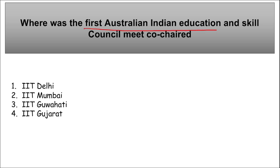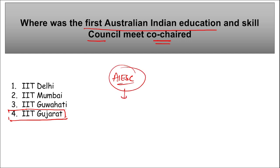The first Australia-India Education and Skill Council meet was co-chaired at IIT Gandhinagar, Gujarat. Education Minister Dharmendra Pradhan — who is Union Minister of Education and Union Minister of Skill Development and Entrepreneurship — co-chaired this first AIESC meeting with Australian Education Minister Jason Clarke and Skill and Training Minister Brendan O'Connor.